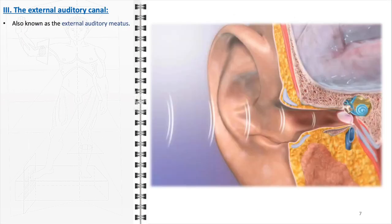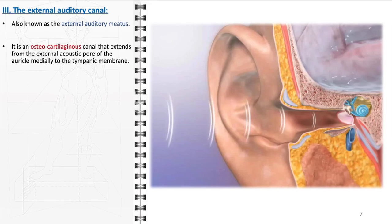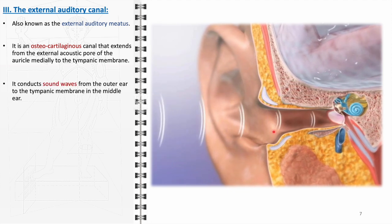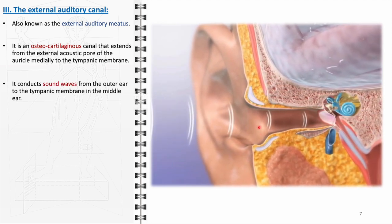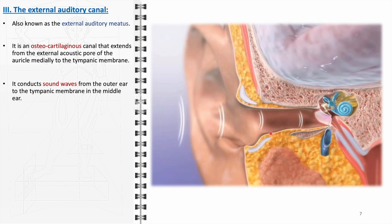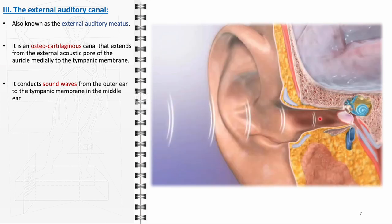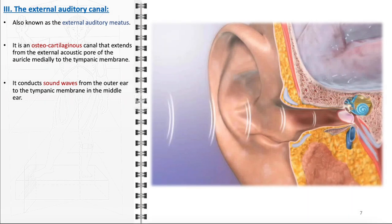The external auditory canal, also referred to as the external auditory meatus, is an essential component of the ear's anatomy, facilitating the conduction of sound waves from the outer ear to the middle ear. This canal, characterized by its osteocartilaginous structure, extends from the external acoustic pore of the auricle medially to the tympanic membrane. Functionally, it serves as a conduit for sound waves, channeling them efficiently from the auricle to the tympanic membrane, allowing for the conversion of sound wave energy into mechanical energy that the middle ear can process.